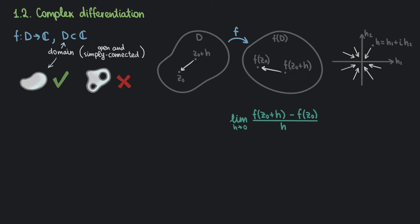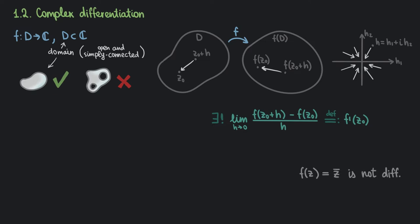Equivalently, h can approach 0 from any direction, and who said it should approach 0 on a straight line? It could do so on a spiral or in any other way, as long as it converges to 0 in the end. There is no reason to assume all these different sequences of values of f are going to have the same limit. It's only when we demand this limit to not just exist, but to be unique for all possible ways h can approach 0 — only in this case do we call this limit the complex derivative of f at z₀. So complex differentiability is a much stronger notion than real differentiability. It significantly restricts the class of all possible complex functions. Even a very simple-looking function may not have a derivative — for example, a function that gives you the complex conjugate of z is not differentiable.